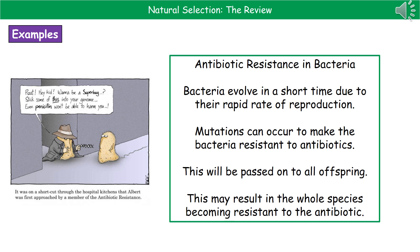The second example is bacteria showing antibiotic resistance. Because bacteria can reproduce every 20 minutes in some cases, they can evolve in a relatively short space of time due to that rapid rate of reproduction. If a mutation makes a bacterium resistant to an antibiotic, and because they reproduce producing clones genetically identical to their parent, all offspring get that mutation as well. In a very short space of time, a whole species of bacteria can become resistant to an antibiotic, which is why we're now seeing big problems with antibiotic resistance in the world.